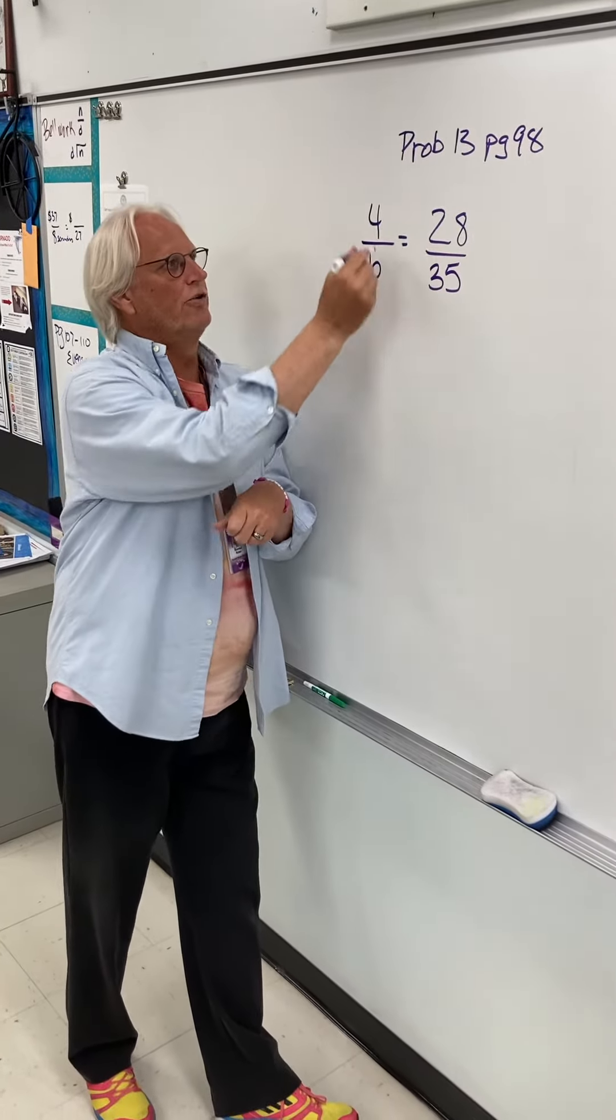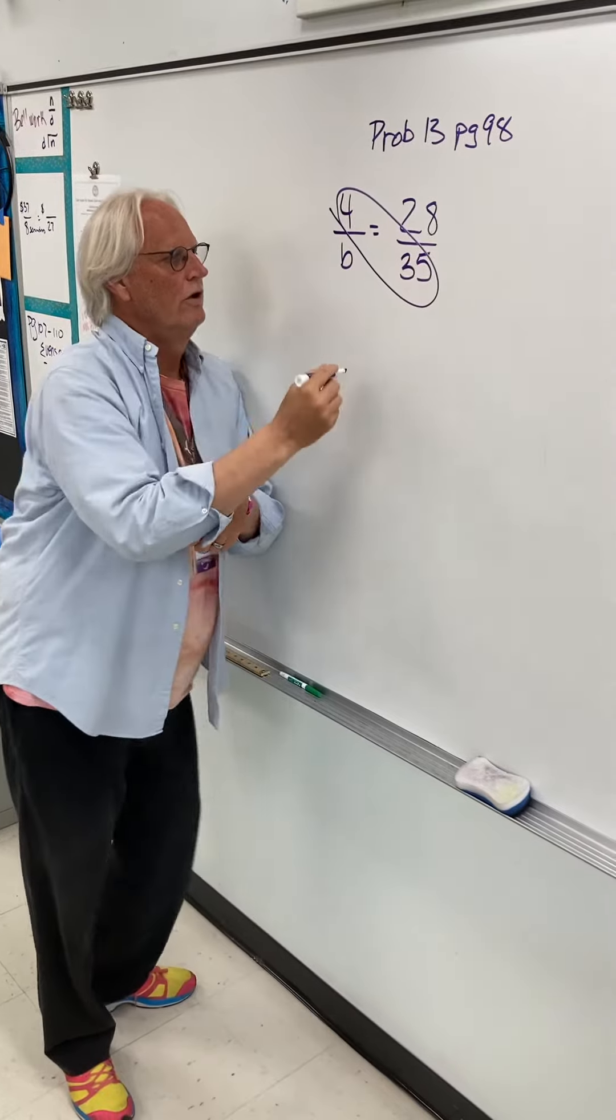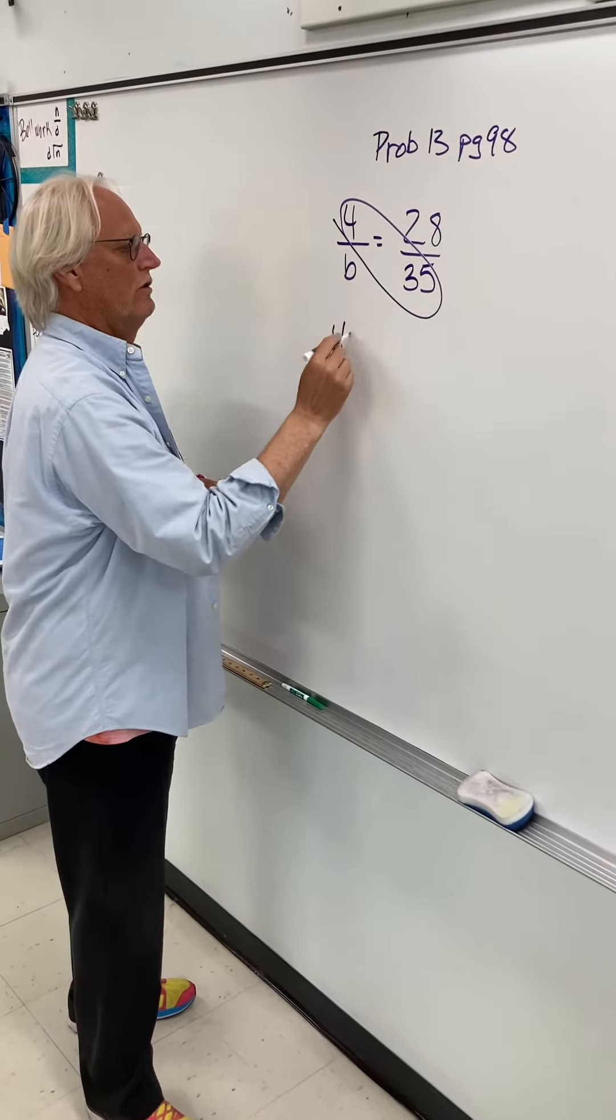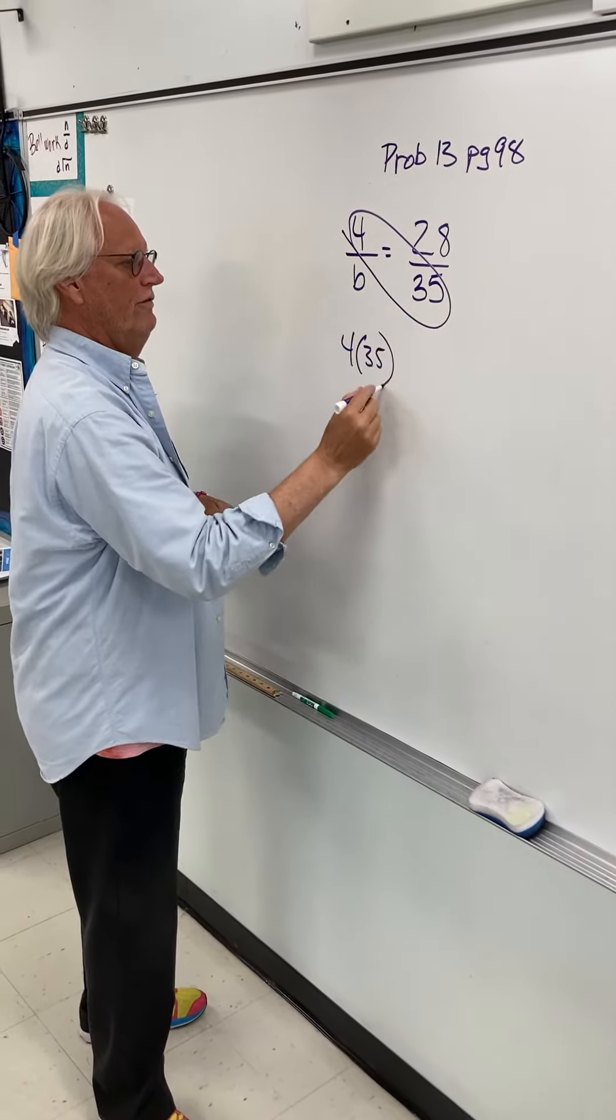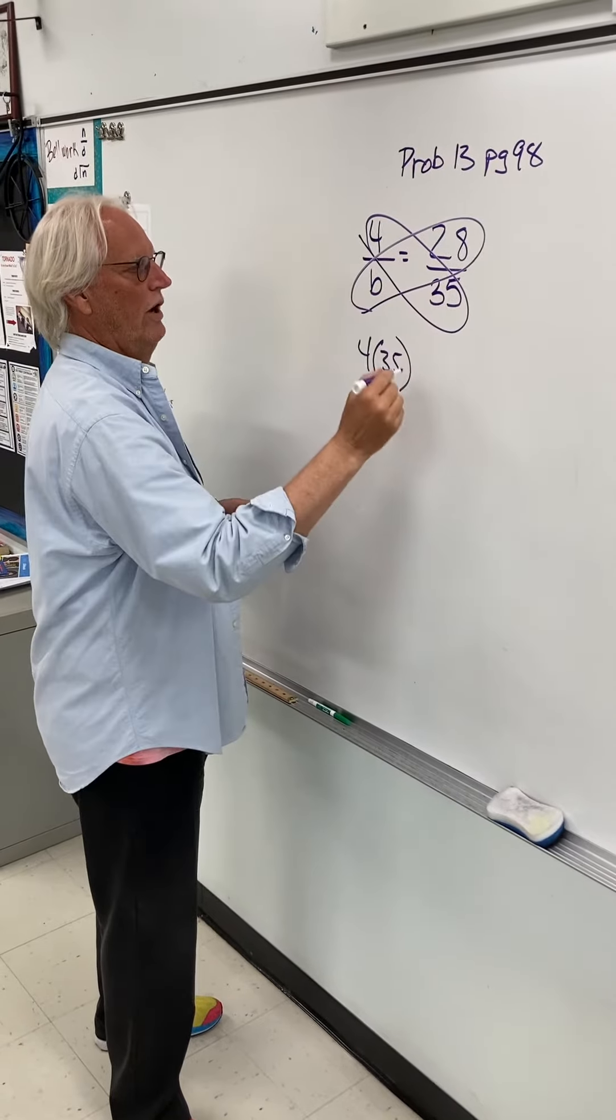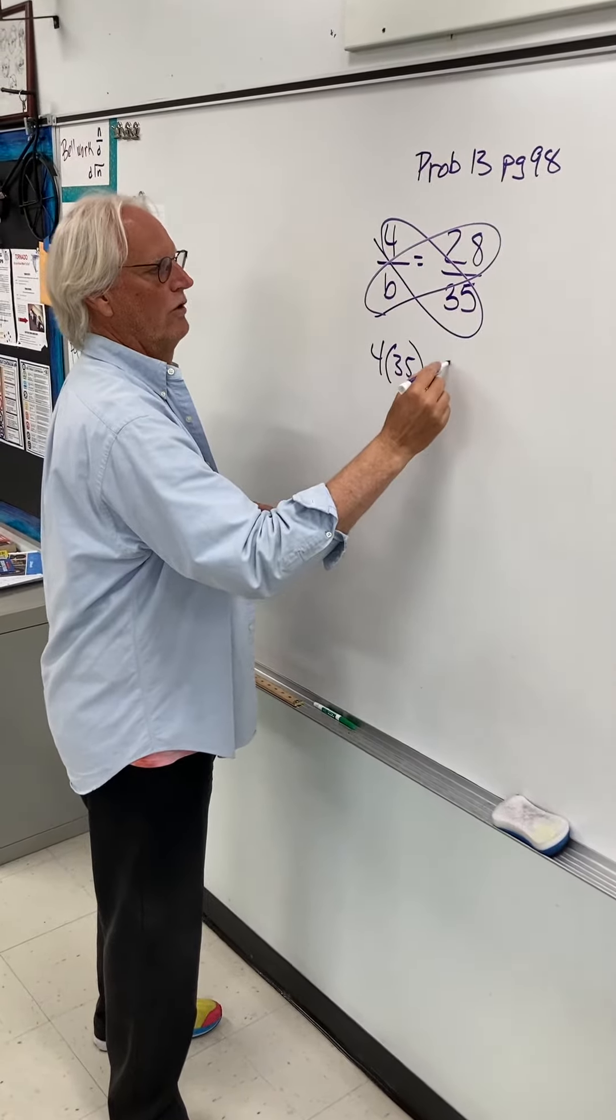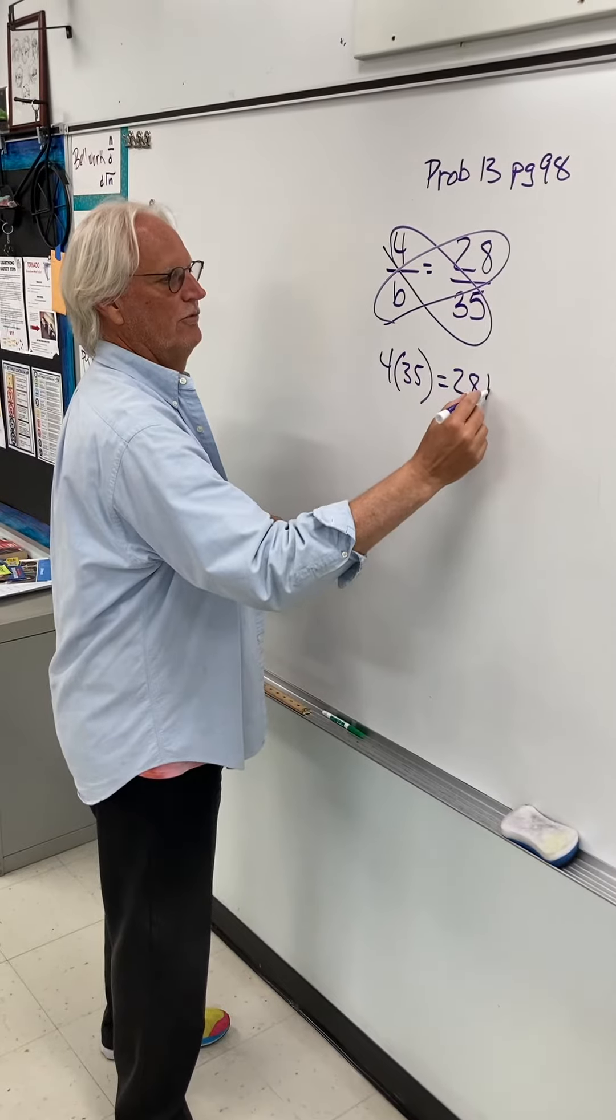So we're going to begin our cross products by doing this. We're going to do 4 times 35 and then we're going to do cross products this way. We're going to end up with 28 times b.